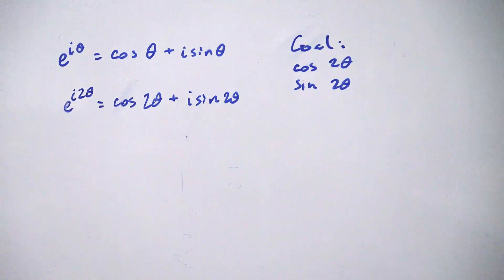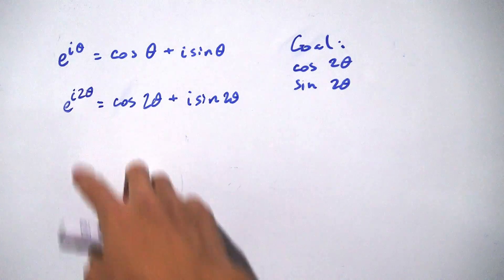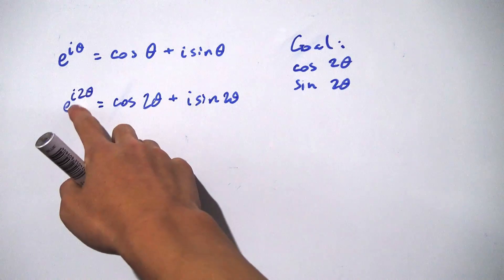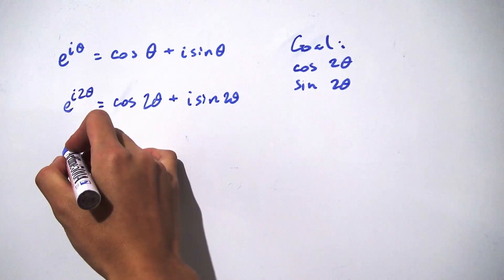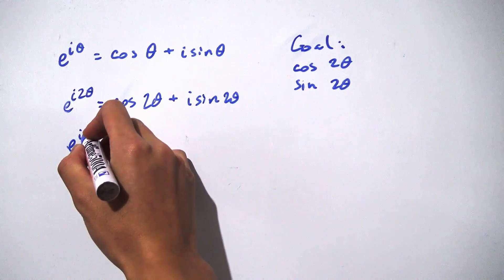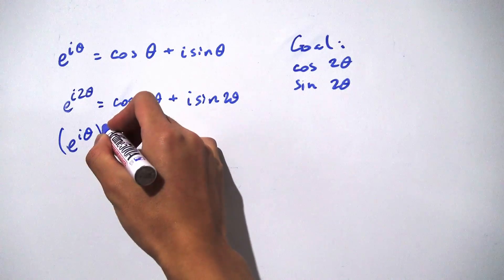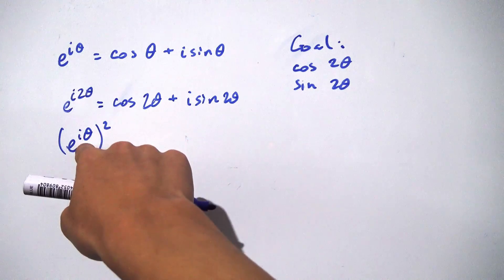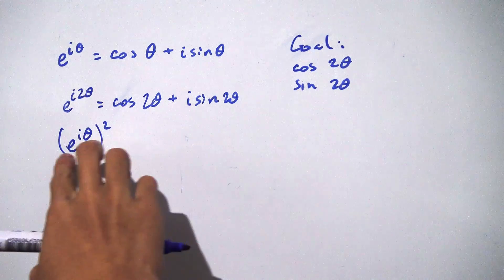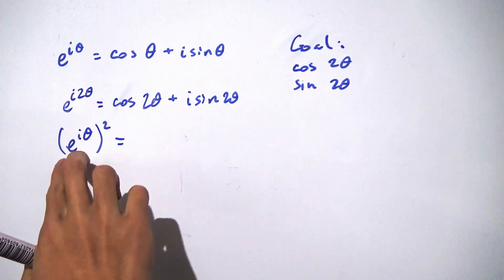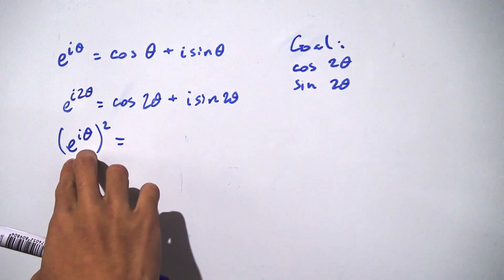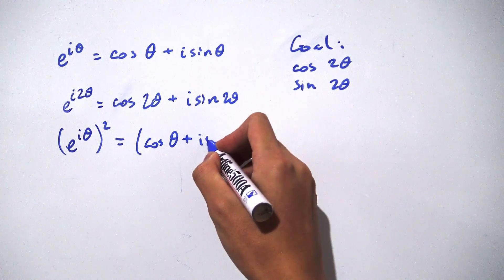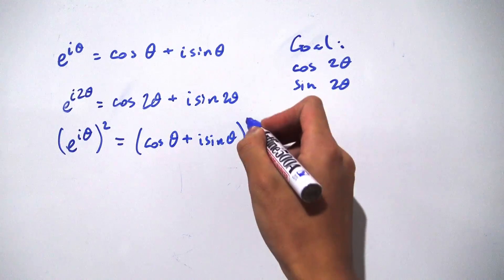Now that we have it in this form, we want to manipulate this term a bit, because we don't want 2θ — we only want θ itself. So why not get rid of this 2 by writing e to the iθ but the whole thing raised to the second power. Using the power rule for exponents, we multiply the 2 in, and we get the exact same thing. Now e to the iθ is nothing but cosine of θ plus i times sine of θ, so we have that quantity squared.